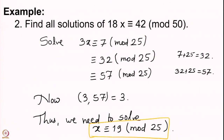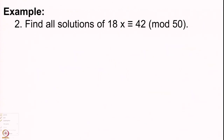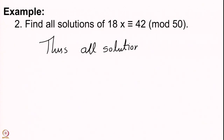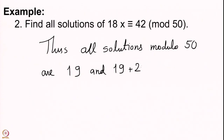We obtained the solution x ≡ 19 (mod 25), and as noted when we proved those lemmas, this solution does not change. So all solutions modulo 50 are 19 and 19 + 25 = 44.